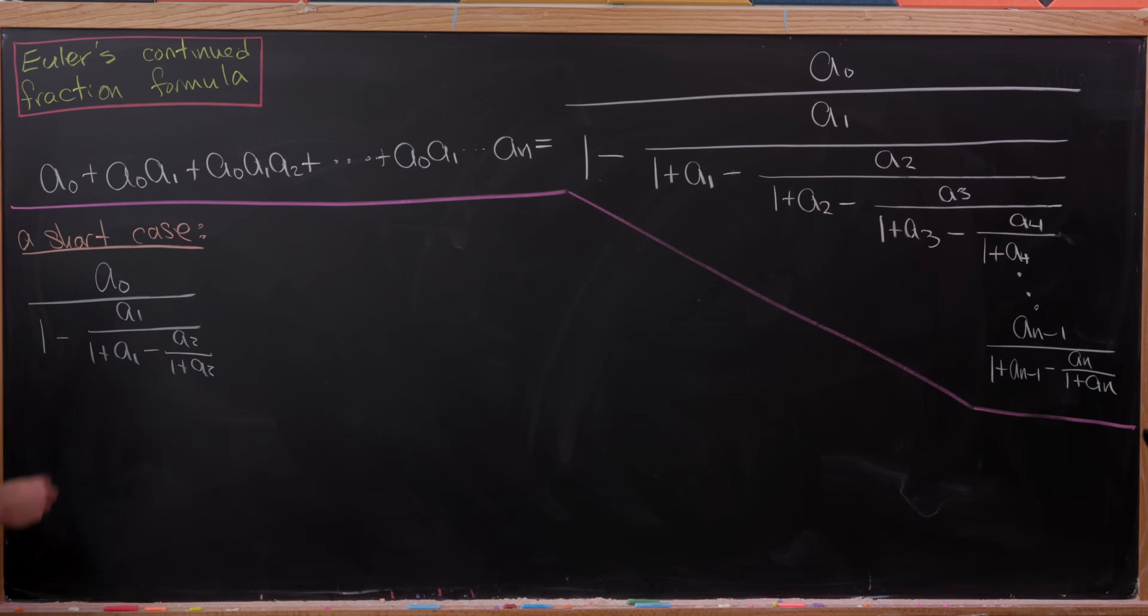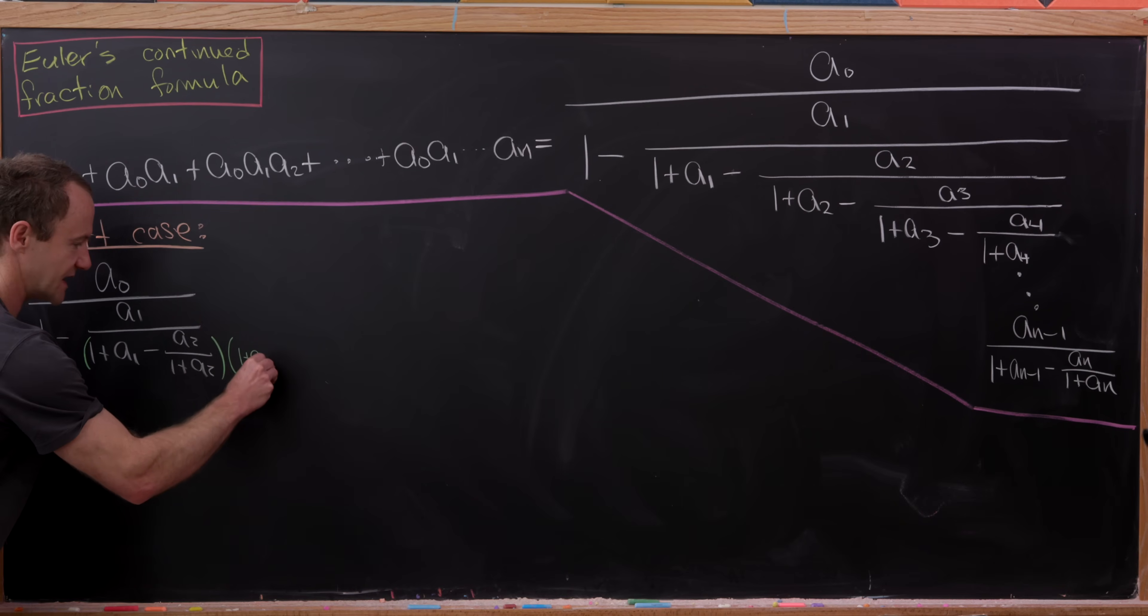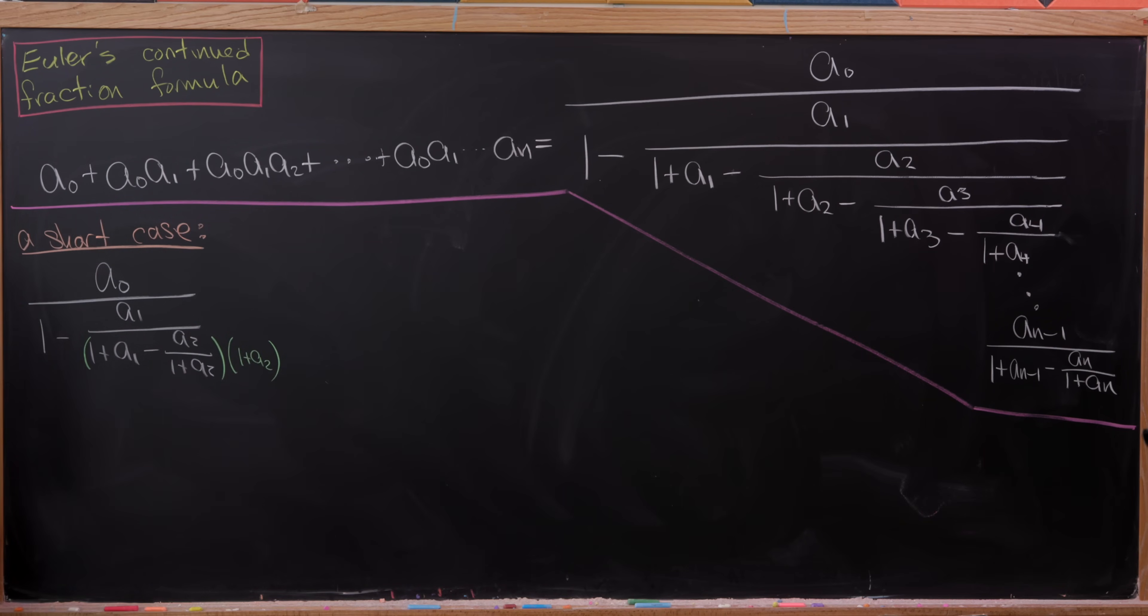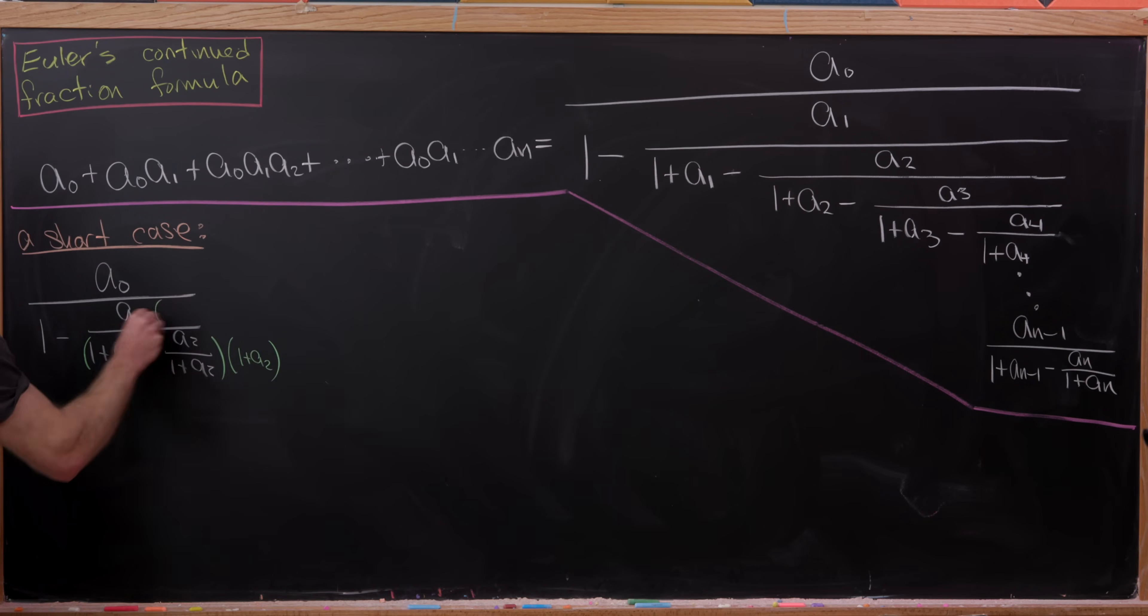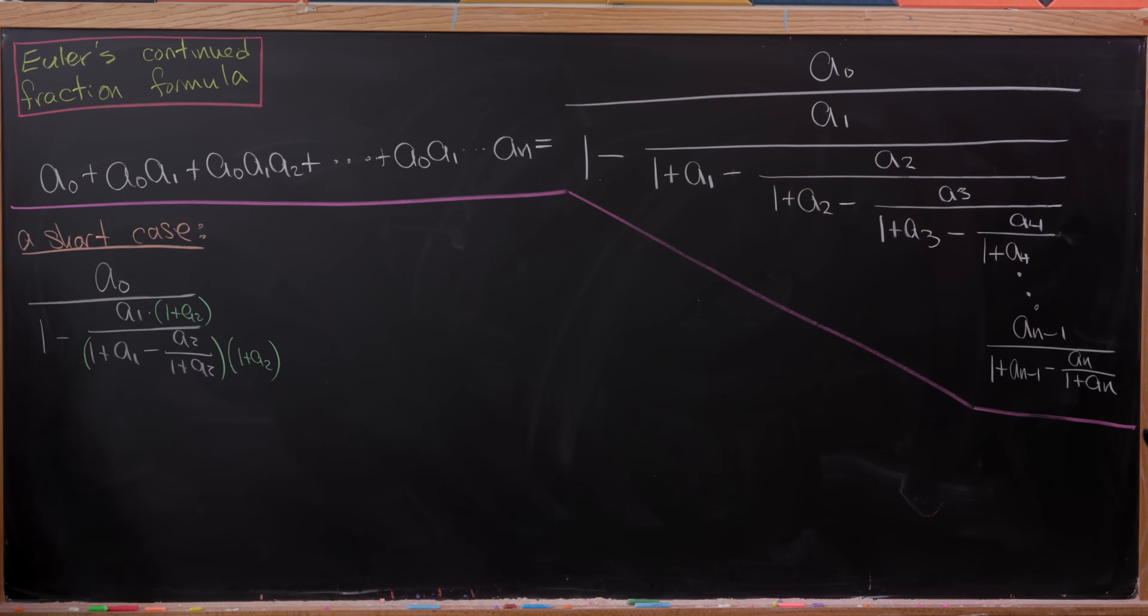So the first thing that I'll do is I'll take this denominator right here and I'll multiply it by 1 plus a2 to clear the denominator within the denominator. But in order to do that, I need to multiply this by 1 plus a2 as well.